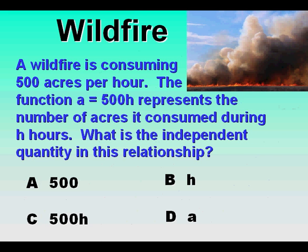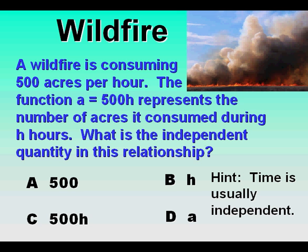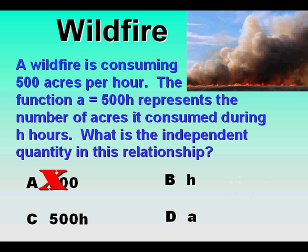Another problem: a wildfire is consuming 500 acres per hour. The function A equals 500H represents the number of acres consumed during H hours. What is the independent quantity in this relationship? As a hint, time is usually independent. The number 500 is not a quantity — it's not a variable. So 500H is not an independent quantity because it has a number with it. The independent quantity is H. Hours come first, and that determines how much acreage is consumed by the wildfire.